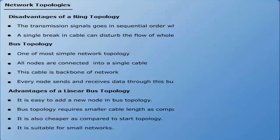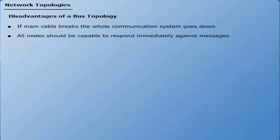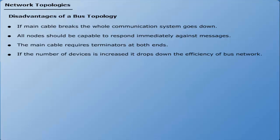Disadvantages of a bus topology. Number 1: If the main cable breaks, the whole communication system goes down. Number 2: All nodes should be capable of responding immediately against messages. Number 3: The main cable requires terminators at both ends. Number 4: If the number of devices is increased, it drops down the efficiency of bus network.